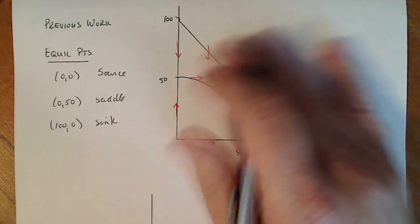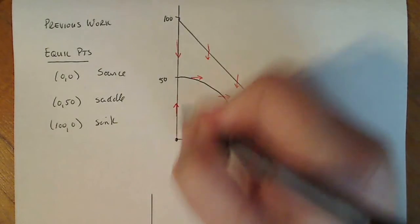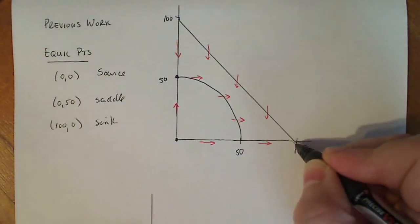When you draw your phase portrait you usually don't put this stuff in there but you refer to it. So I have an equilibrium point here, here, and here.